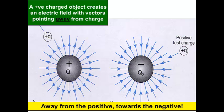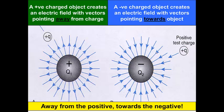A positively charged object creates an electric field with vectors pointing away from the charge. A negatively charged object creates an electric field with the vectors pointing towards the object. So here it's showing that like and like repel. Here it's showing that opposites attract.